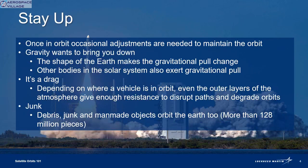Once you achieve orbit, you have to keep it. Fuel on board the vehicle is used periodically to maintain or augment the orbit. The surface of the Earth isn't flat and smooth, so changes in the surface or topology of the Earth — all those mountains and valleys — can affect how the Earth pulls on the satellite over time.